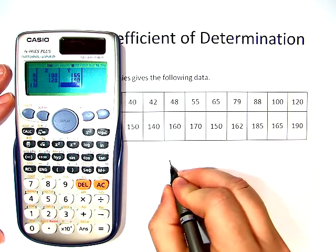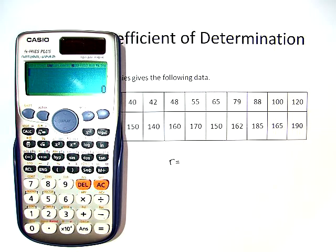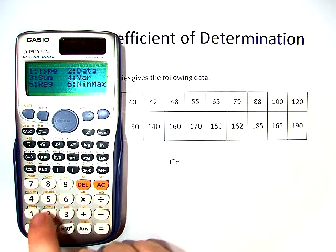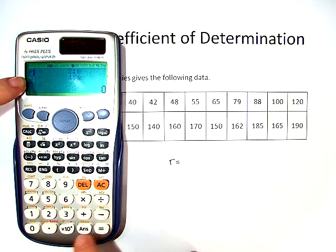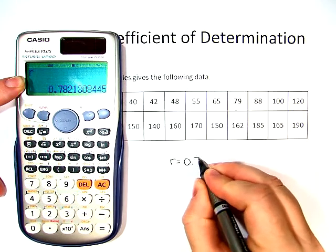The first thing we have to find is our r. To do this, we go back to the main screen, and just like when finding a and b, we're going to do the same steps. Shift, stat, we go to regression, and we choose number 3, r.